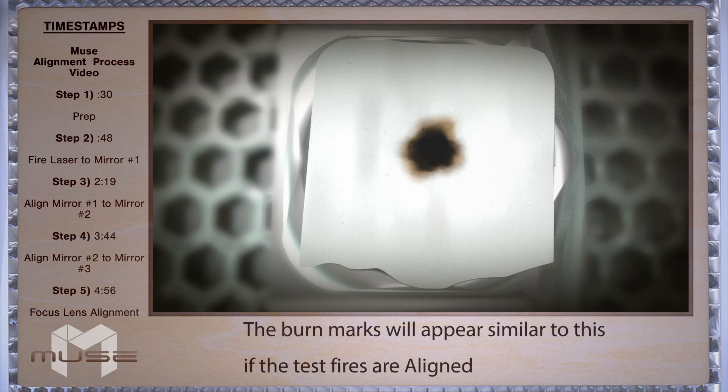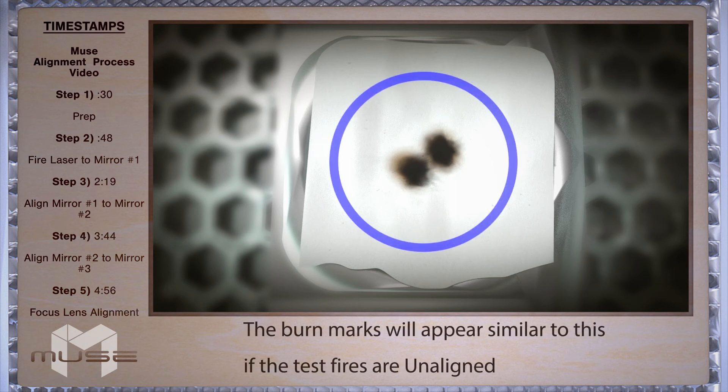Once again there'll be two observable burn marks on your thermal paper. If they don't overlap then you'll have to adjust mirror two.